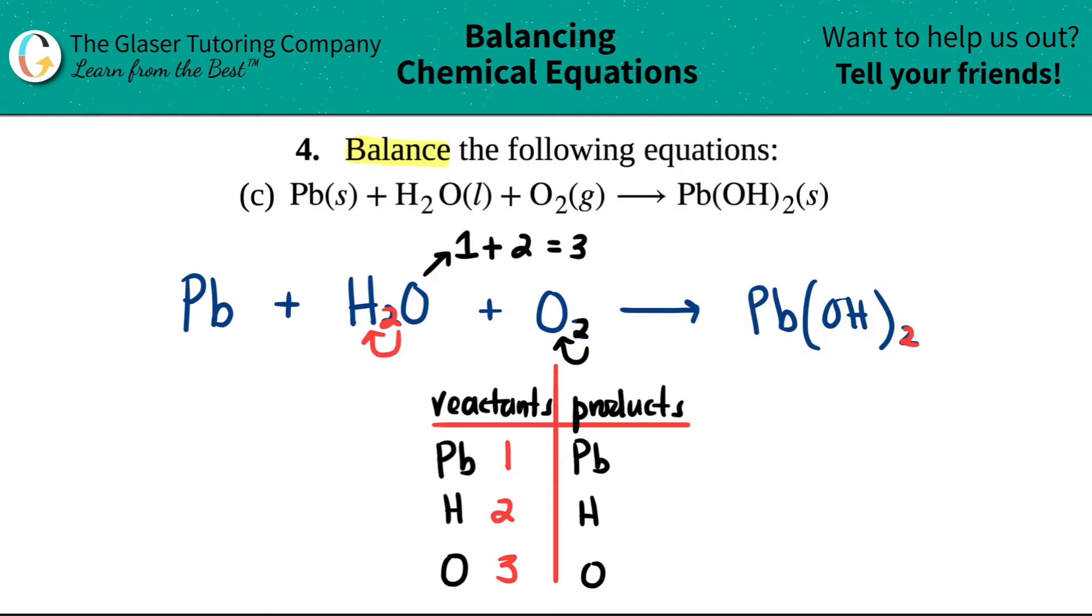Now let's see how many we have on this side. Pb, you only have one of these. The two over here only goes for the elements in the parentheses, not outside, so I have one Pb. I have oxygen—one inside the parentheses, but it's being multiplied by two, so I really have two oxygens. And I have two hydrogens for the same reason: one times two is two.